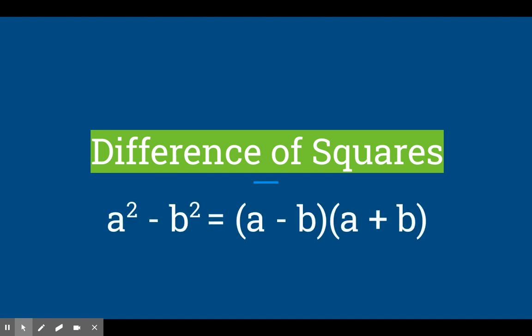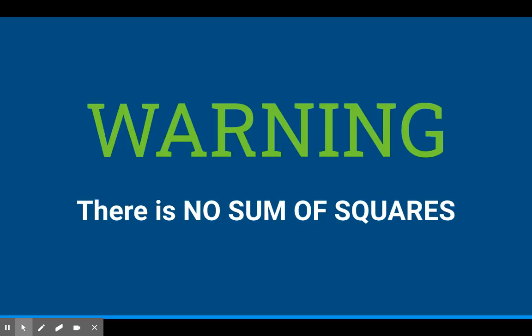So for the difference of squares, we have this formula we can use. a squared minus b squared is the square root of the first term and the square root of the second term, so a minus b times a plus b. Warning, there is no sum of squares. So there is no such thing as a squared plus b squared. It only works for a squared minus b squared.